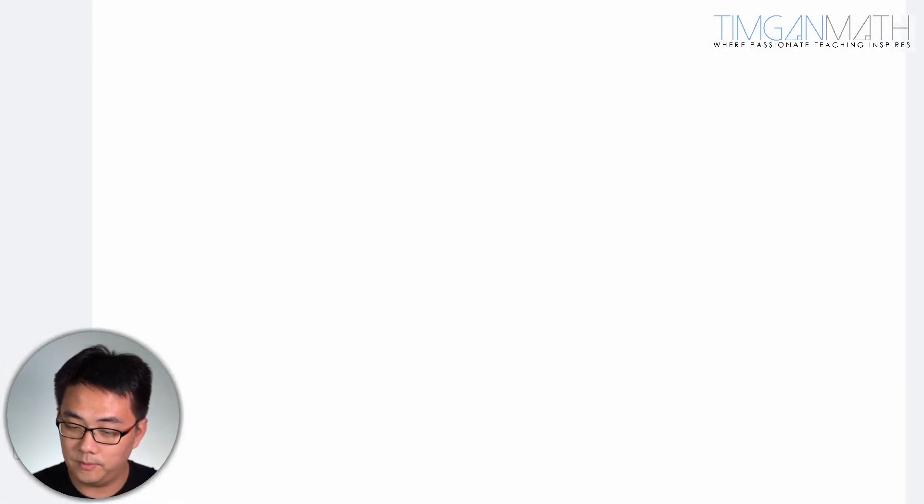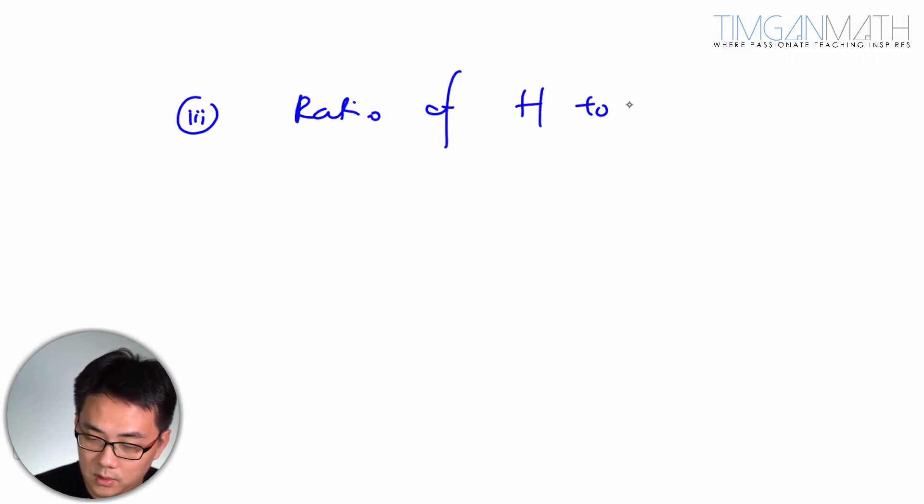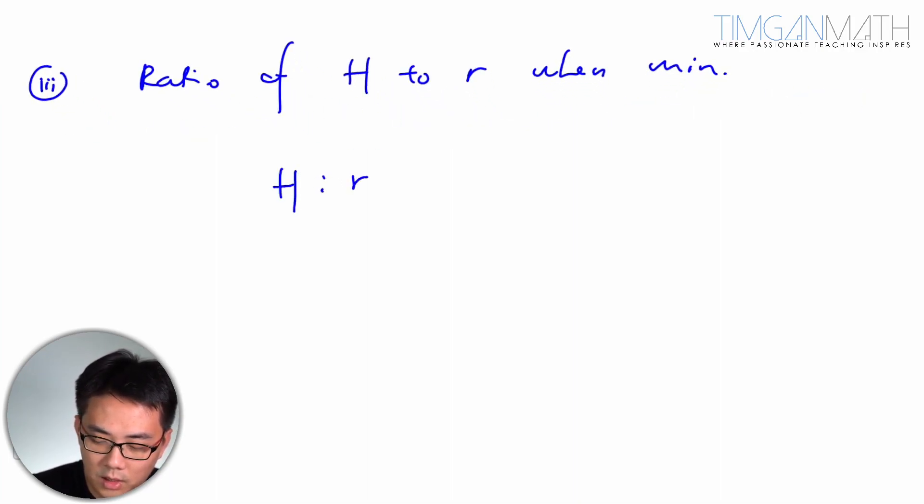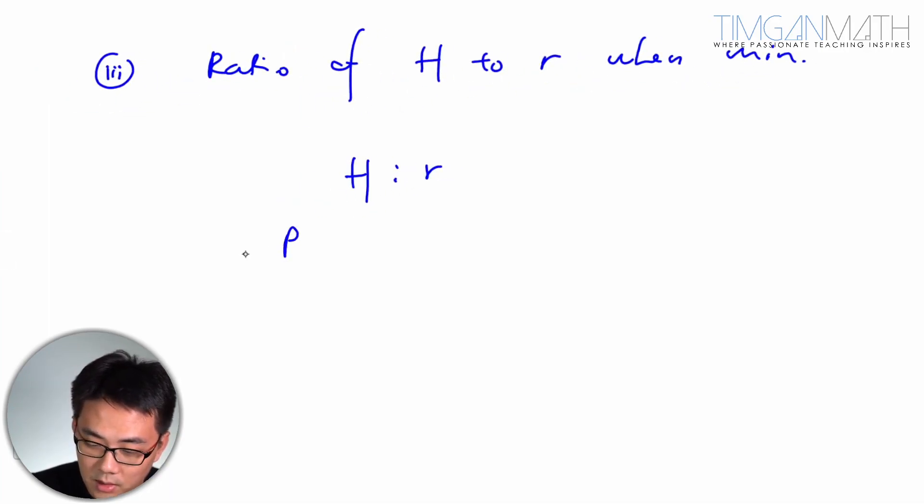So ratio H to R when minimum. That will be H to R. H would then be P over pi R squared minus 4R over 9. This is your H, but the thing is, this is H. I will put this as H.